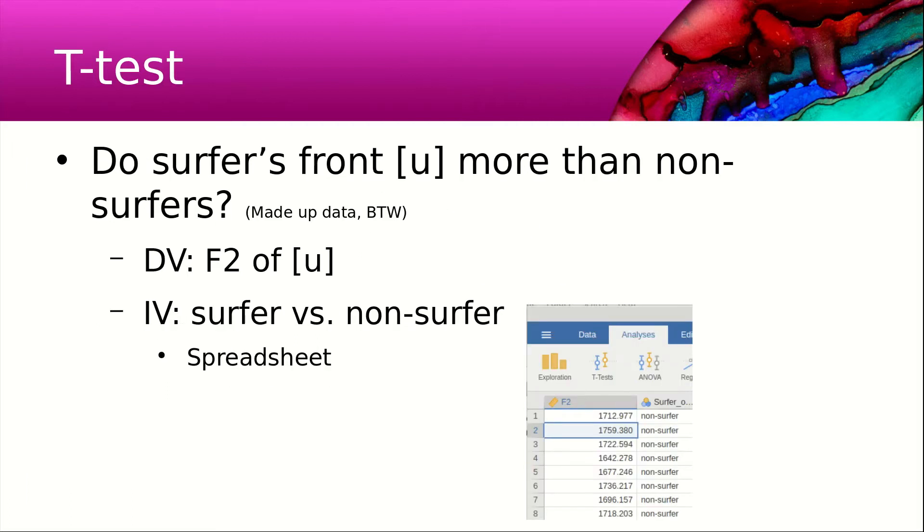For this analysis we're going to look at whether surfers front the vowel OO more than non-surfers, and it's made-up data. The dependent variable is the F2 of OO, and the independent variable is surfer versus non-surfer, and this is what the spreadsheet looks like.